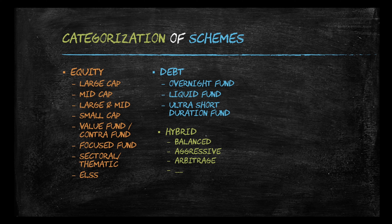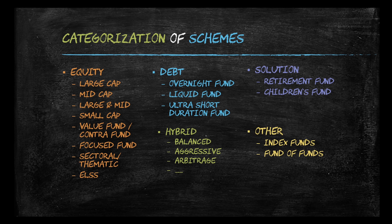Hybrid mutual funds are ones where investments are done in both equity and debt, and possibly in other asset classes as well. For example, a balanced hybrid fund has roughly equal equity and debt exposure, whereas an aggressive hybrid fund has more equity exposure than debt. Solution-oriented mutual funds include retirement funds and children's funds, which typically have a lock-in period of five years. Then we have other categories such as index funds — for example, funds investing in Sensex and Nifty indexes — and fund of funds.